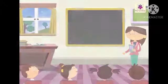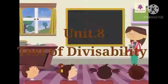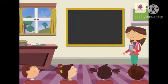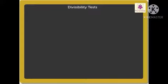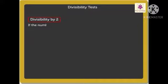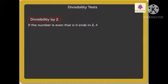Next chapter: Unit 8, Tests of Divisibility. I will explain the divisibility rule along with video. Divisibility by 2: if the number is even, that is, if it ends in 2, 4, 6, 8 or 0, we say that the given number is divisible by 2.